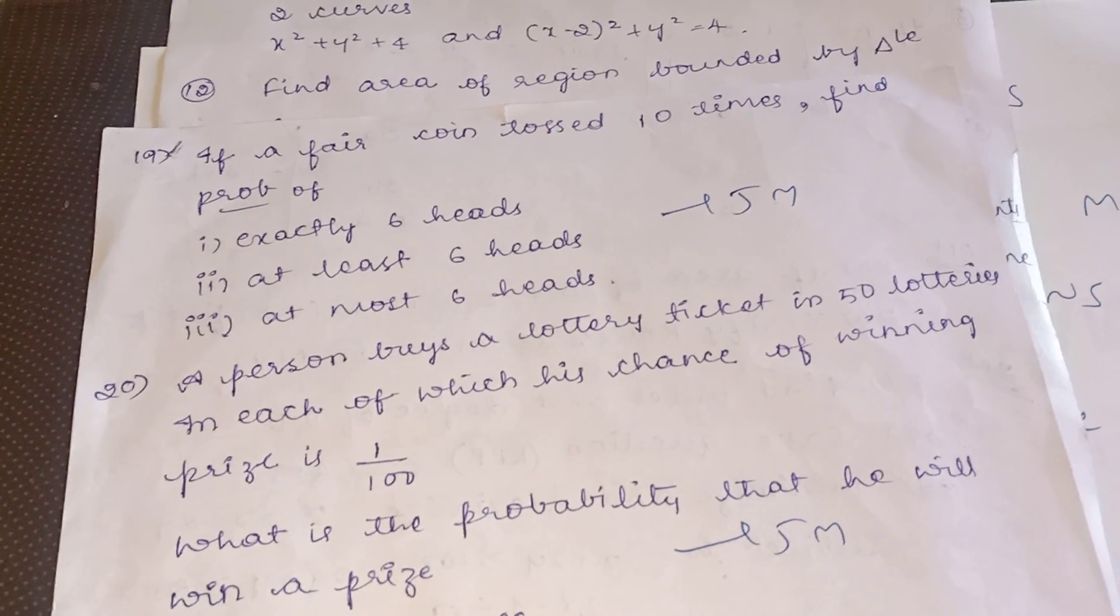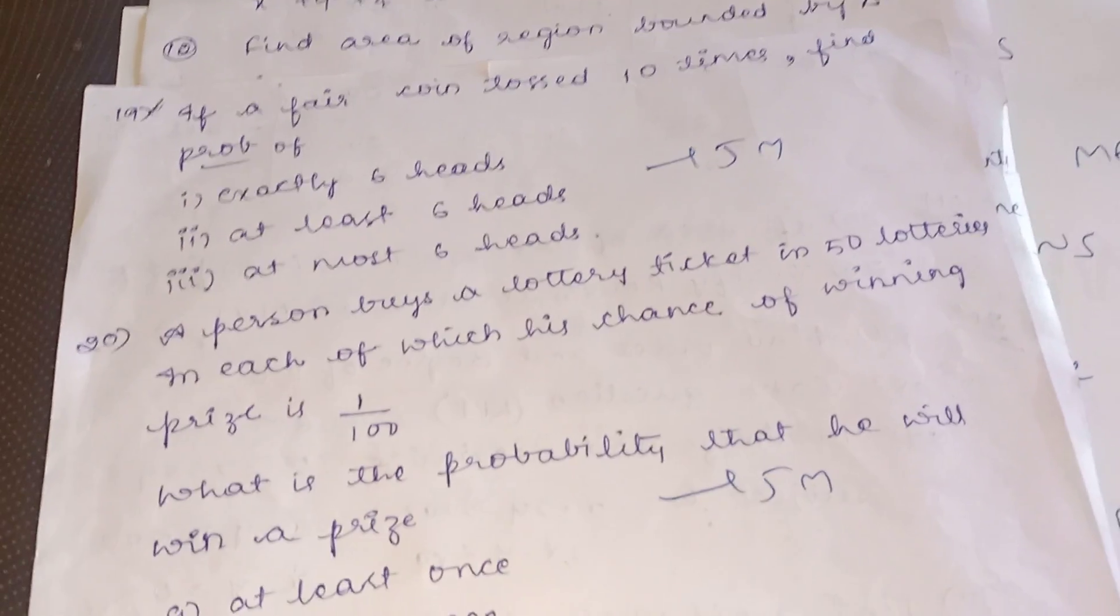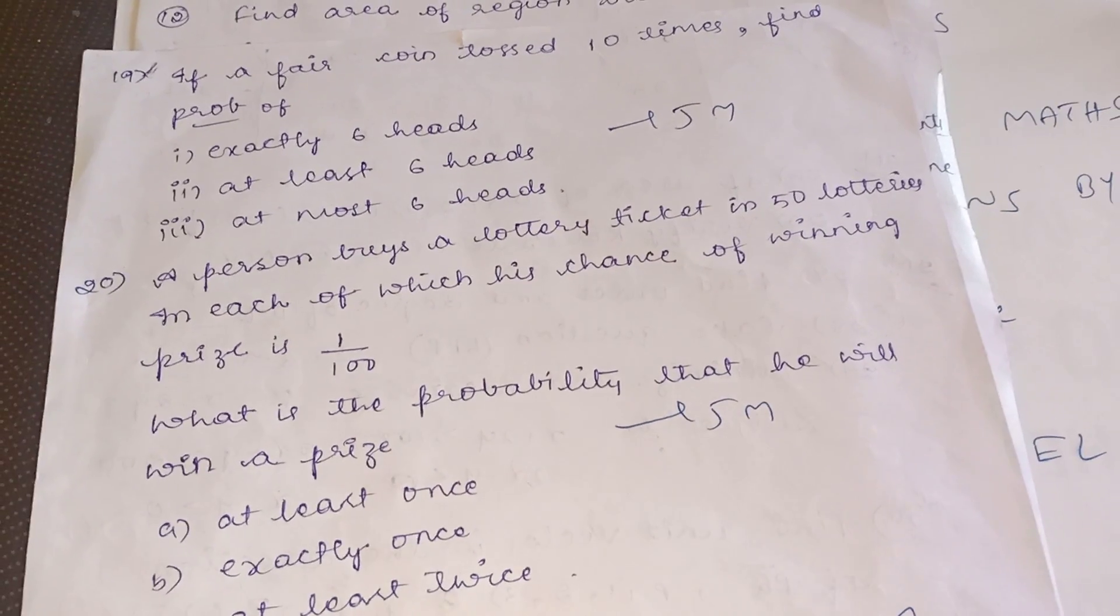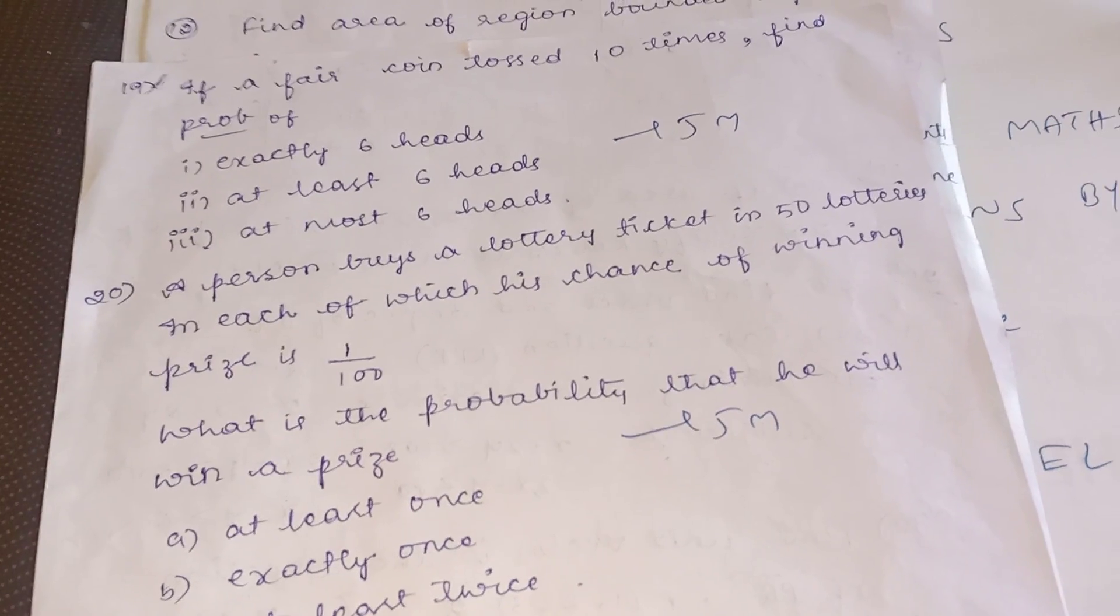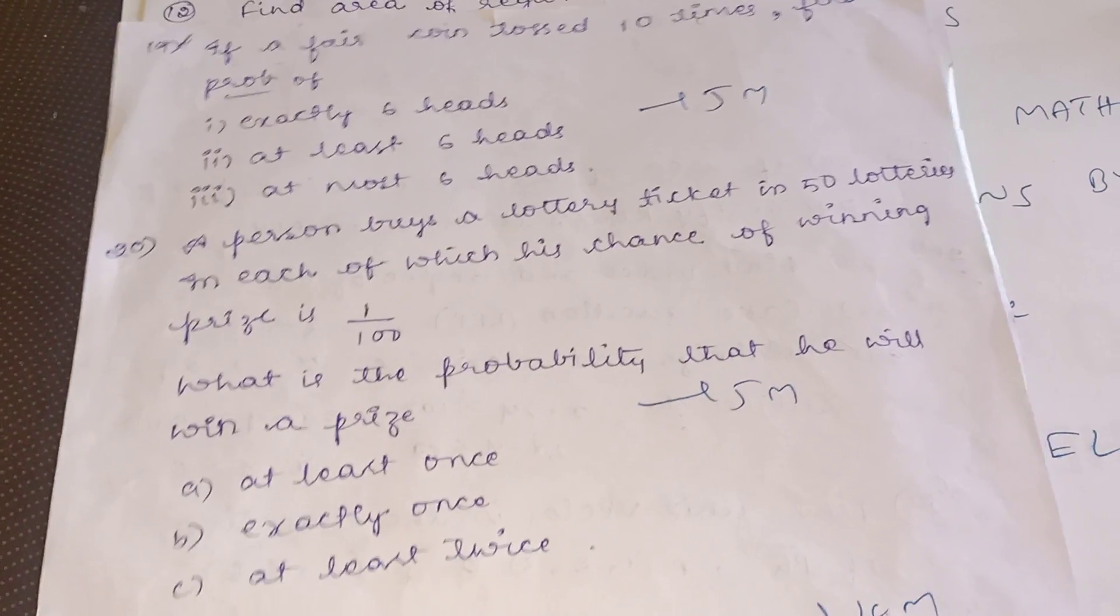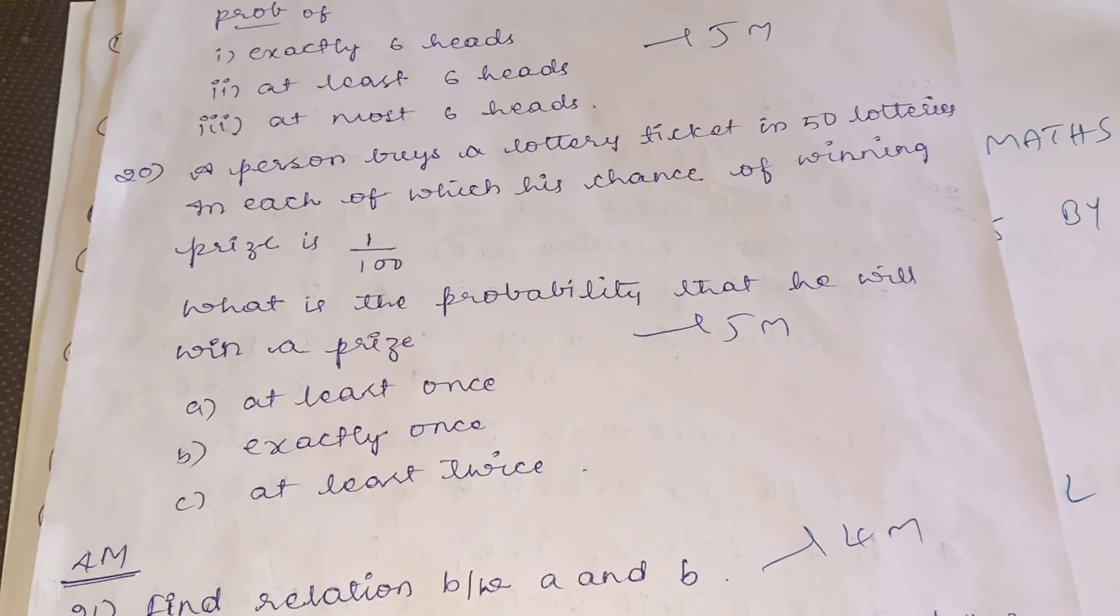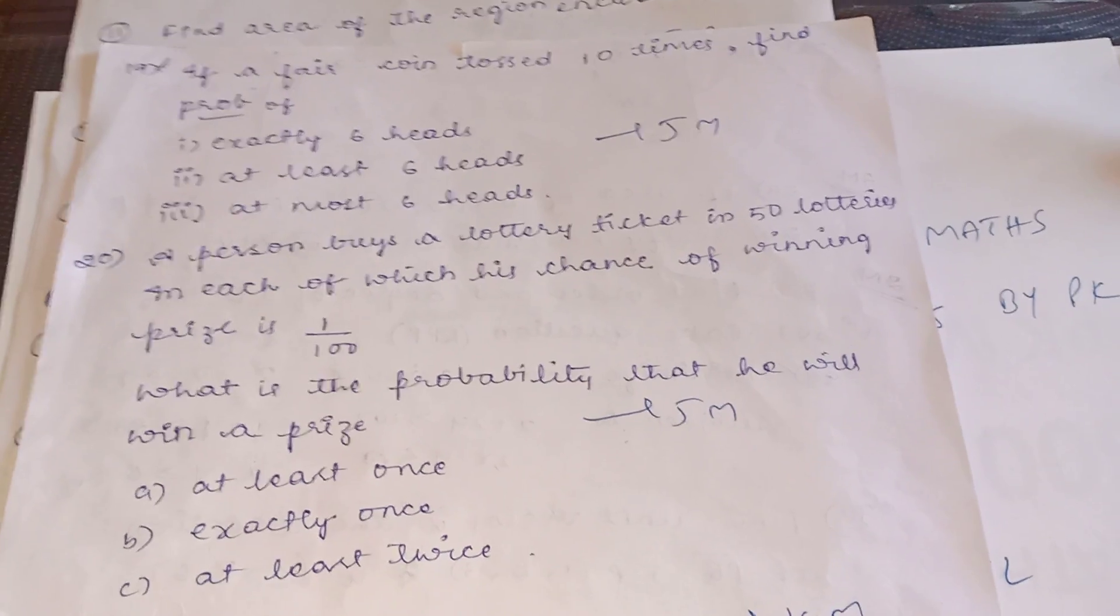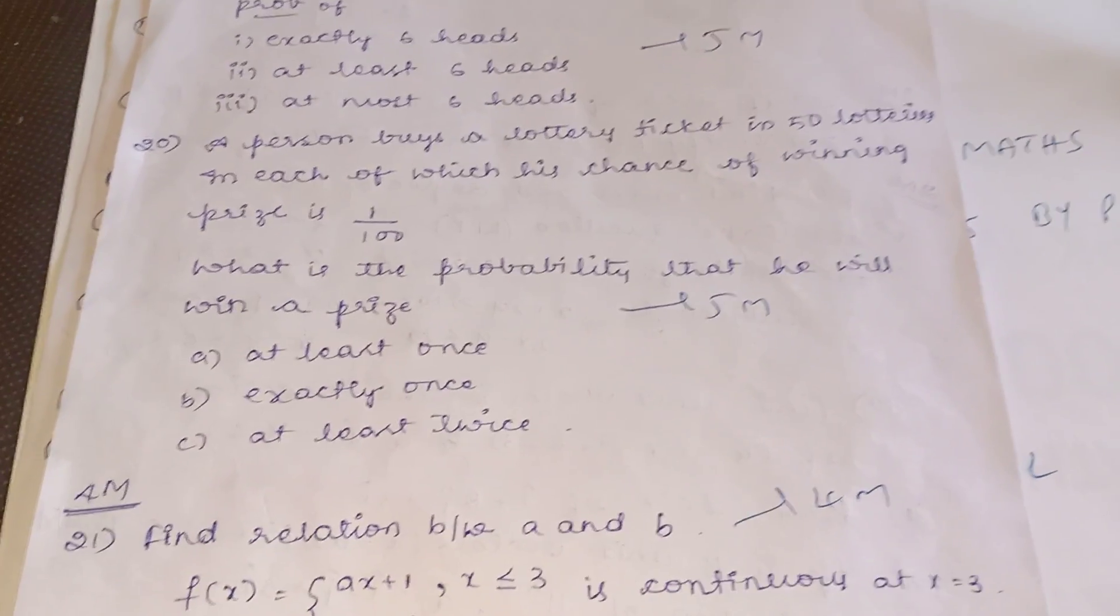Or if you go to next model in probability, a fair coin is tossed ten times, find the probability of exact success, at least six sets, at most six sets. Or nowadays if you observe, a person buys a lottery ticket in 50 lotteries, in each the chance of winning price is 1 by 100. What is the probability of winning a price at least once, exactly once, at least twice. This model question may appear in probability.